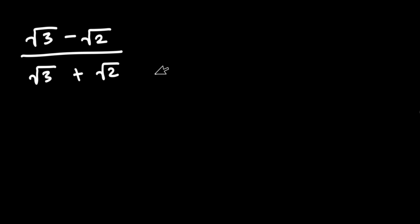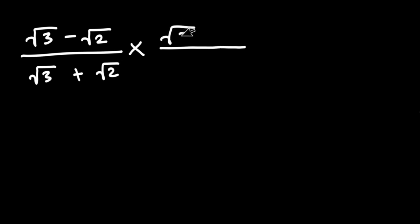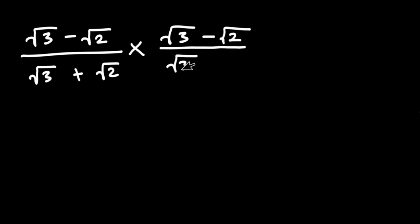The very first thing I want to do is rationalize this by multiplying both the numerator and the denominator by the conjugate of what we have. Since the denominator is plus, the conjugate must be minus, giving us square root of 3 minus square root of 2, all divided by square root of 3 minus square root of 2.